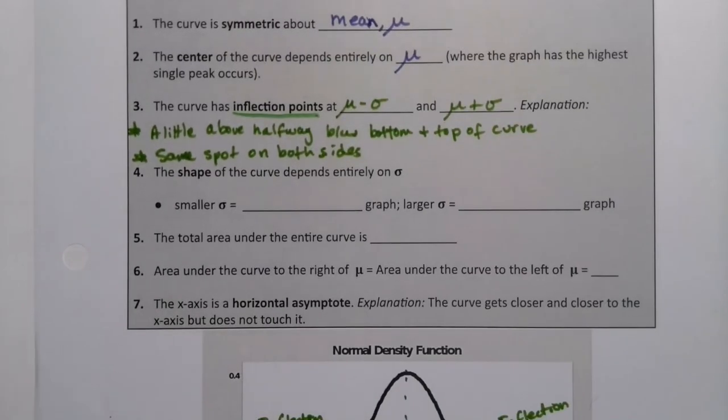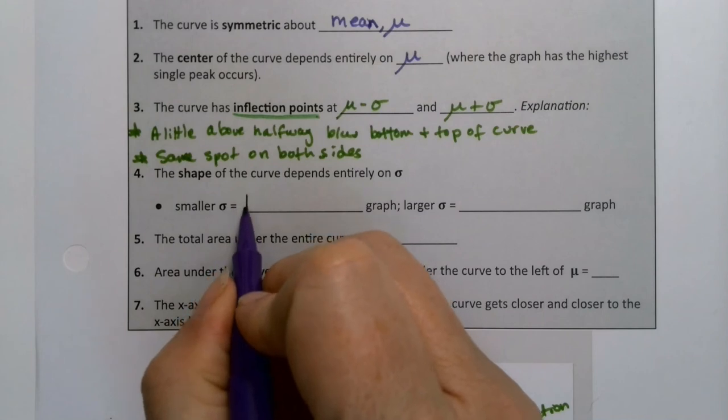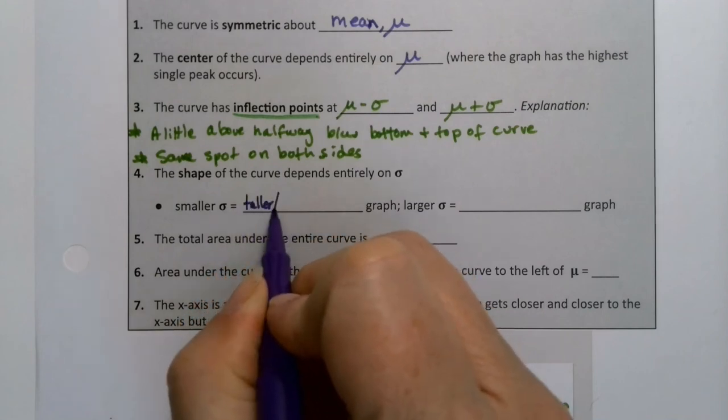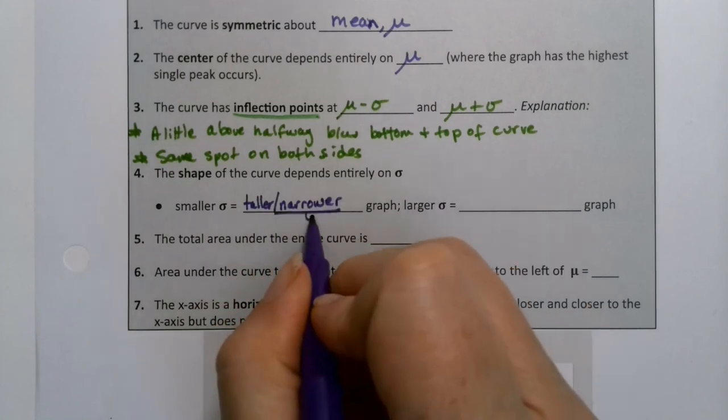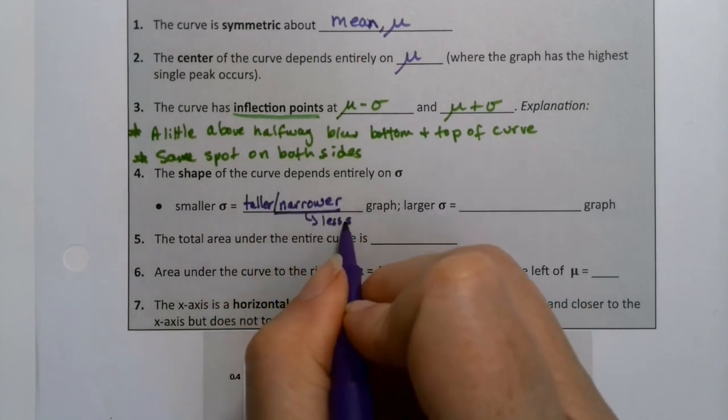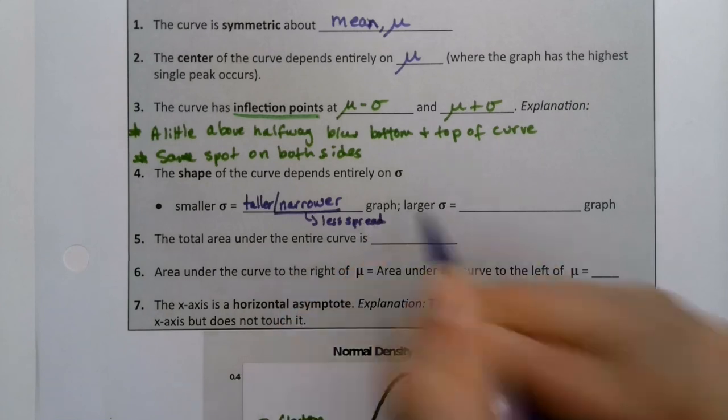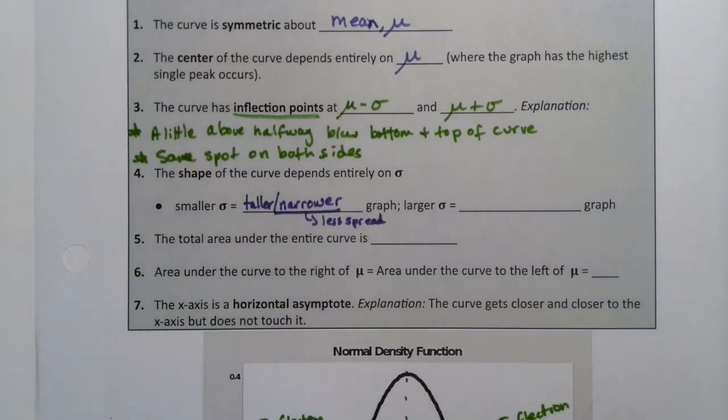It's more compact. So if we have a smaller standard deviation, that means we have a taller, narrower curve. And the narrow part is important because if it's narrower, that means it has less spread. Because remember, that's what standard deviation is a measurement of.